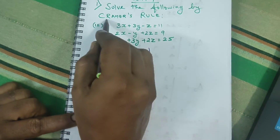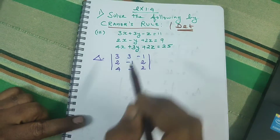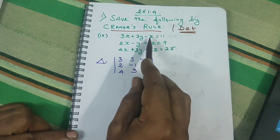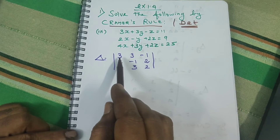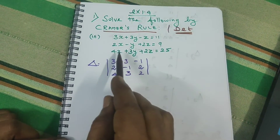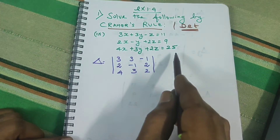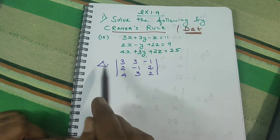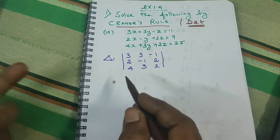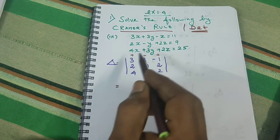In Cramer's rule, we set up the coefficient determinant. The x-coefficient, y-coefficient, and z-coefficient form the determinant delta. We apply the plus, minus, plus sign pattern: plus 3 into its minor, minus 3 into its minor, plus 1 into its minor — using cofactor expansion as learned in 11th standard.